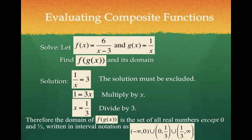Because we can't plug 0 into g, and I also cannot have 1 third because 1 third plugged into g would make my f of x function 0.